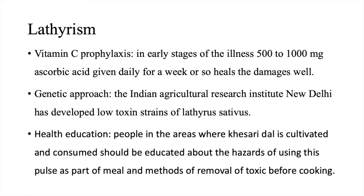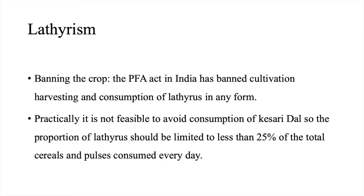Vitamin C prophylaxis: In early stages, 500 to 1000 mg of ascorbic acid given daily for a week or so heals the damage well. Genetic approach: The Indian Agriculture Research Institute, New Delhi, has developed low-toxin strains of Lathyrus sativus. Health education: People in areas where Khesari dal is cultivated and consumed should be educated about the hazards of using this pulse and methods of removal of the toxin before cooking. Banning the crop: The Prevention of Food Adulteration Act in India has banned cultivation, harvesting, and consumption of Lathyrus sativus in any form. Practically, it is not feasible to avoid consumption entirely, so the proportion of Lathyrus sativus should be limited to less than 25 percent of the total cereals and pulses consumed every day.